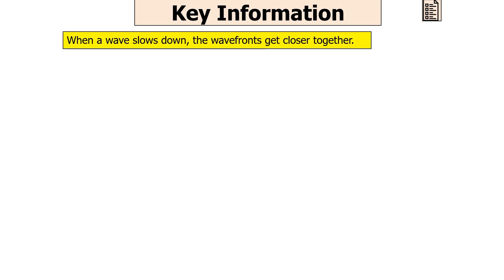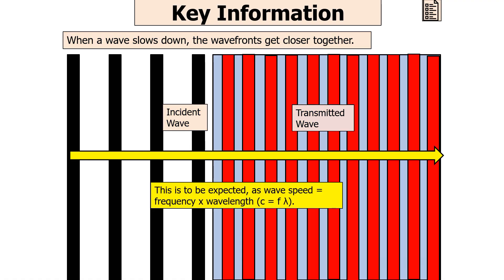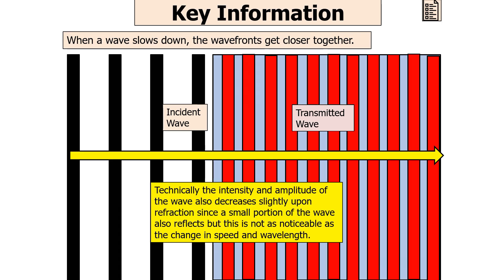When a wave slows down the wavefronts get closer to each other, as shown in the wavefront diagram. This is expected because wave speed equals frequency times wavelength. Since the frequency is determined by the source and must remain constant, if the speed decreases the wavelength must also decrease. Technically, the intensity and amplitude of the wave also decrease slightly upon refraction since a small portion reflects, but this is less noticeable than the change in speed and wavelength.